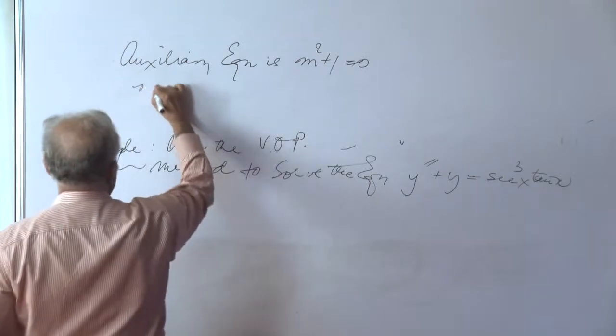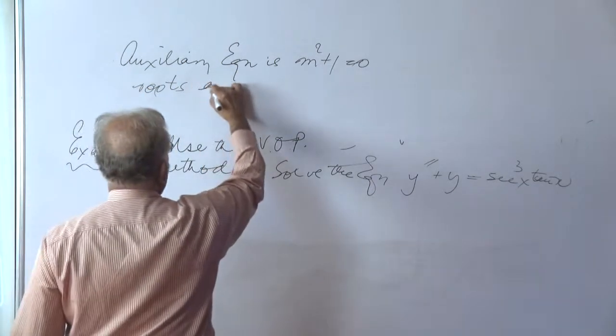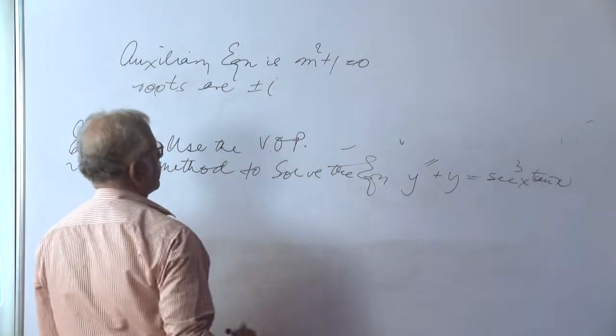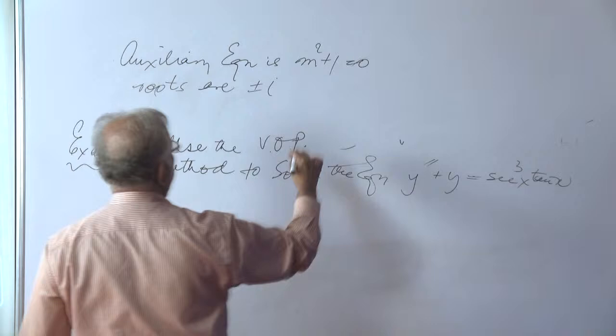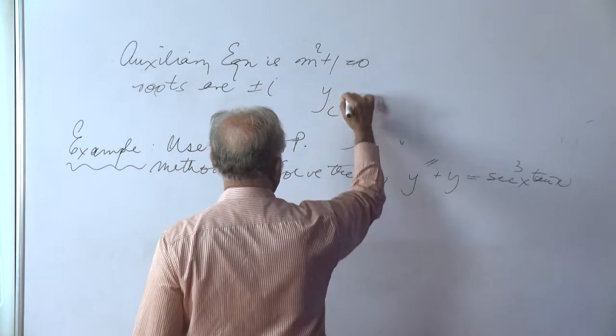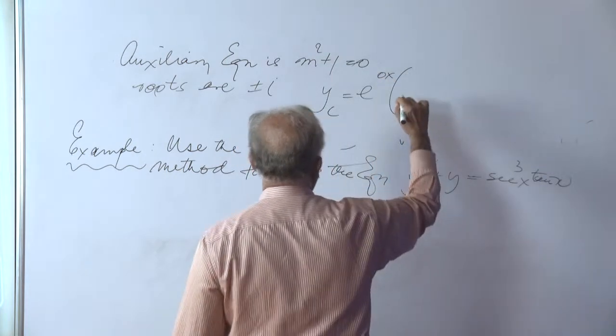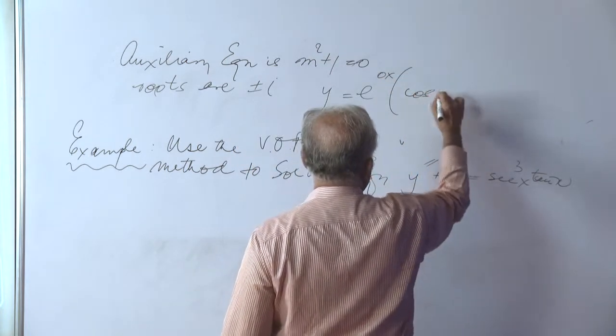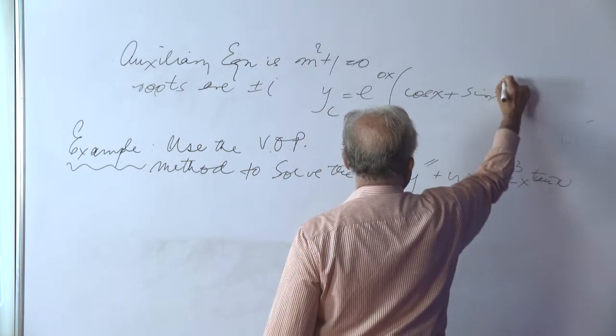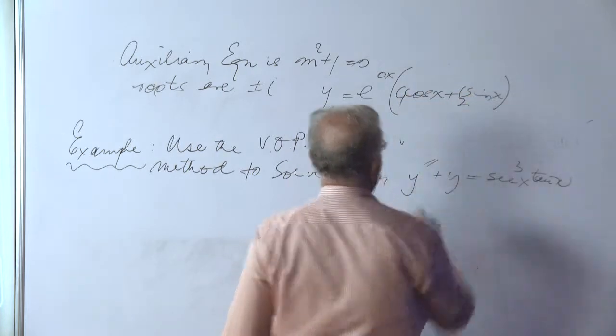The roots are pure imaginaries plus minus i. So, the complementary function is yc e to the power of 0x into cos x plus i. The complementary function c1 c2.